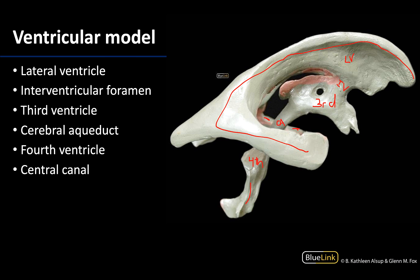The pink portions that you can see on this model — a little bit here, a little here, a little in this region — represent where the choroid plexuses are located within the ventricles, which is where CSF is actually produced.